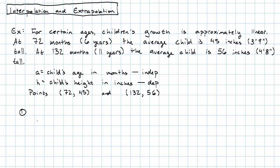So, to write down an equation relating these two variables, we're going to first find the slope. It's the change in our dependent variable over the change in our independent variable, which is going to be 11 over 60.